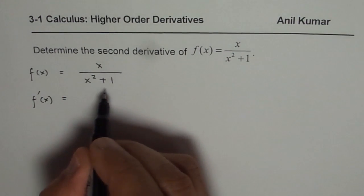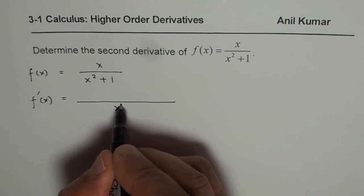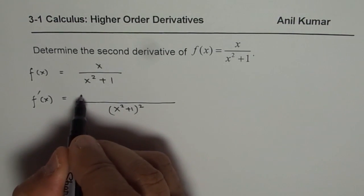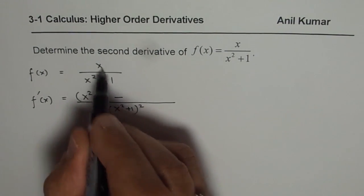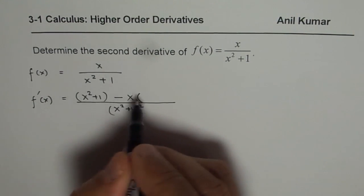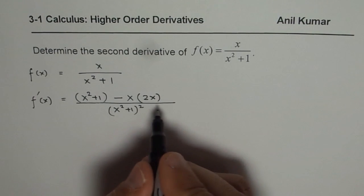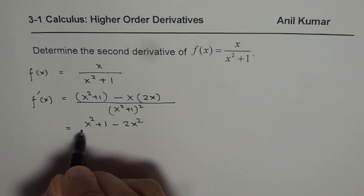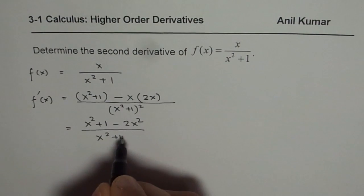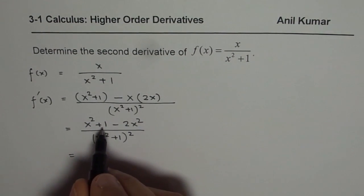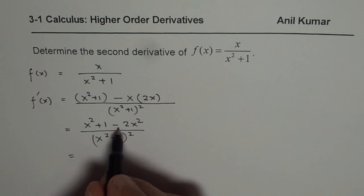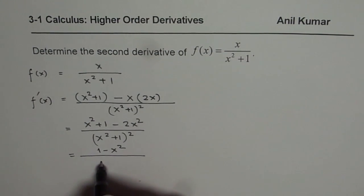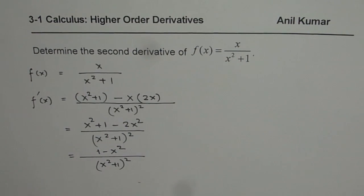We can apply the quotient rule here to find the derivative. That means square of the denominator, times the derivative of the first function which is 1, times the second function which is x squared plus 1, minus the first function — the numerator — times the derivative of the denominator which is 2x. Simplifying, we get x squared plus 1 minus 2x squared over (x squared plus 1) squared, which can be written as 1 minus x squared over (x squared plus 1) squared. This is the first derivative.